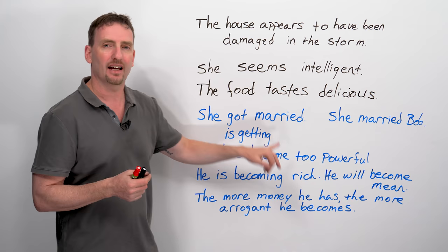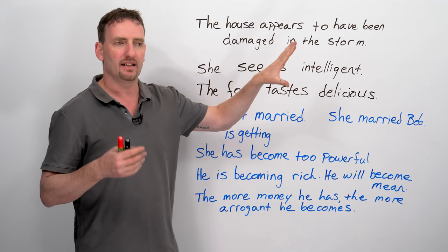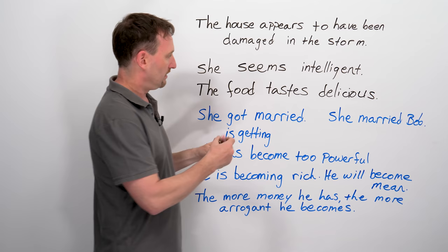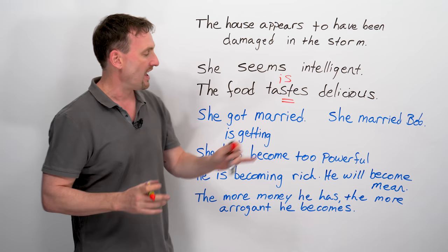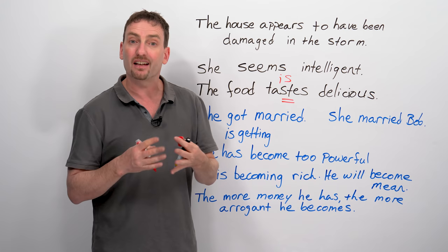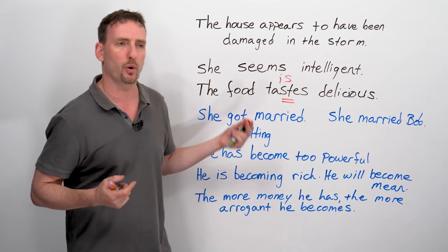On the other hand, get and become can take all the different forms. And while all of these basically, they're like an equal sign, so the food tastes delicious and the food is delicious mean the same thing, this is just a more specific verb and it basically means equal. Food, delicious, same thing. Become and get are verbs that are copular, they're still linking verbs, but they suggest a change. And this is very important.